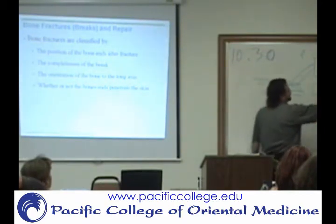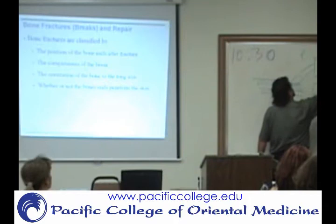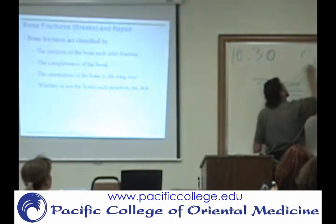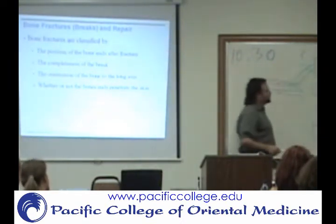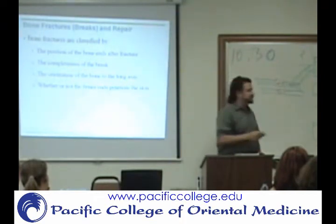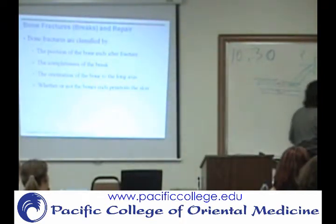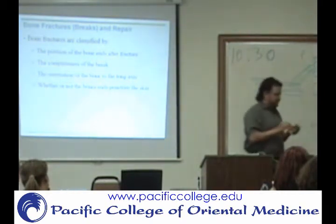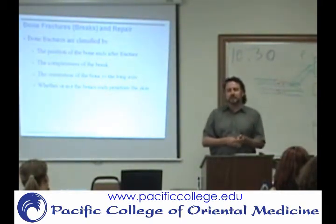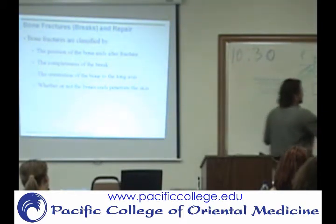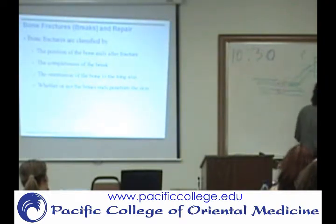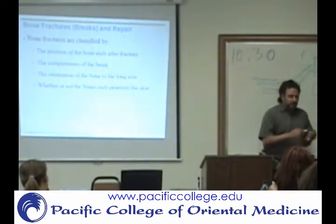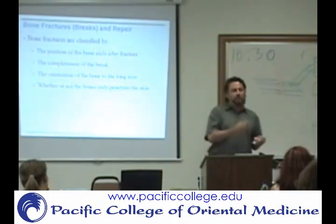The way that the trabeculae form in the bone, in the vertebrae, creates a weak area on that bone — right here. So when you have compression fractures in the vertebrae, they tend to happen on the anterior part. When you get a compression fracture, it's going to look like this. If you have osteoporosis, the bones are going to be weaker, so you're going to be more prone to something like that.